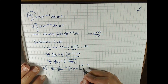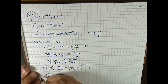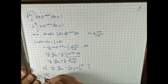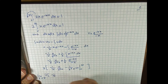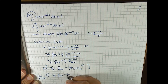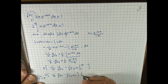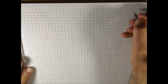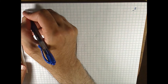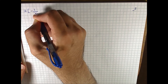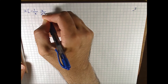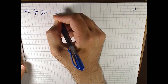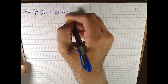Let's replace infinity by p and take the limit as p goes to infinity. We have the limit as p goes to infinity of: 2 times negative 1 over k times x over e to the kx, minus 1 over k squared times 1 over e to the kx, evaluated from 0 to p. Applying the fundamental theorem of calculus, we substitute the upper limit p and the lower limit 0.